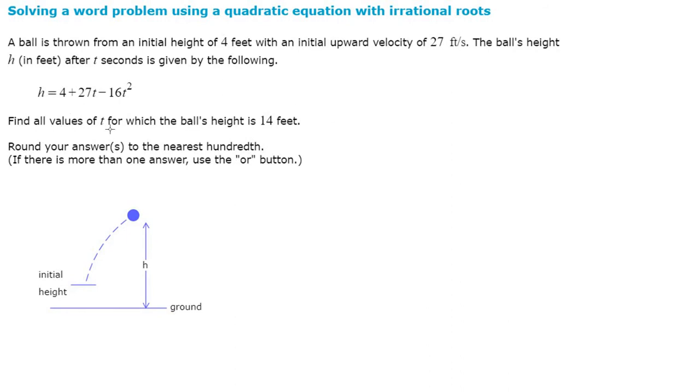Find all values of t for which the ball's height is 14 feet. So let's go ahead and underline the 14 because this is going to be very useful for us later in the equation. Round your answer to the nearest hundredth. So let's go ahead and begin.